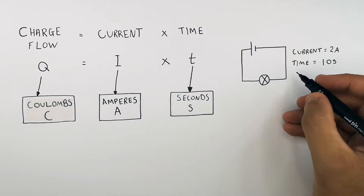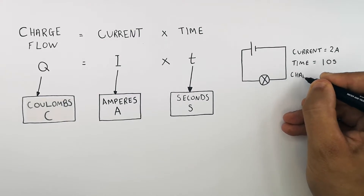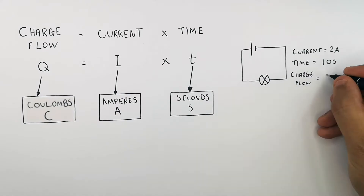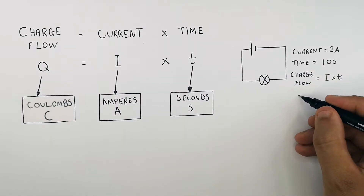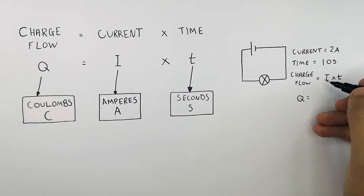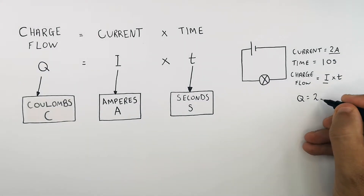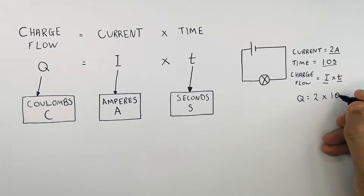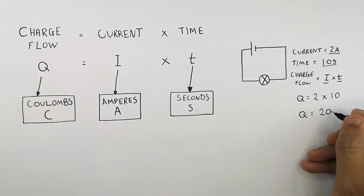You can use the current and the time to calculate the charge flow in the circuit using the equation Q equals I times T. We're trying to calculate Q, so you don't need to rearrange the equation. Q equals I times T, which is 2 amps times 10 seconds, so Q equals 20 coulombs.